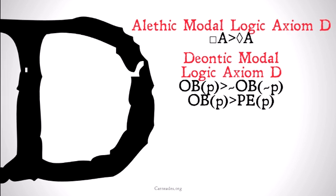In Deontic modal logic, Axiom D is going to look pretty similar. It's going to be: it's obligatory that P implies it's not the case that it's obligatory that not-P. Or equivalently, it's obligatory that P implies it's permissible that P. Once again, obligation maps onto necessity very nicely, in an isomorphic way, and permissibility maps onto possibility similarly.